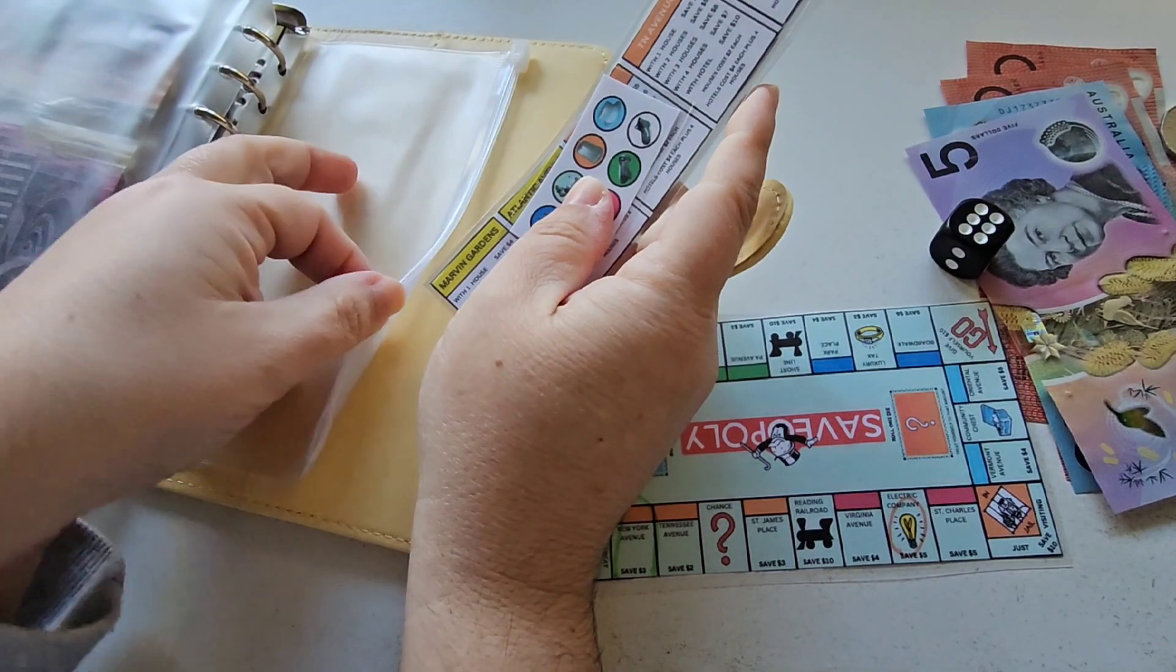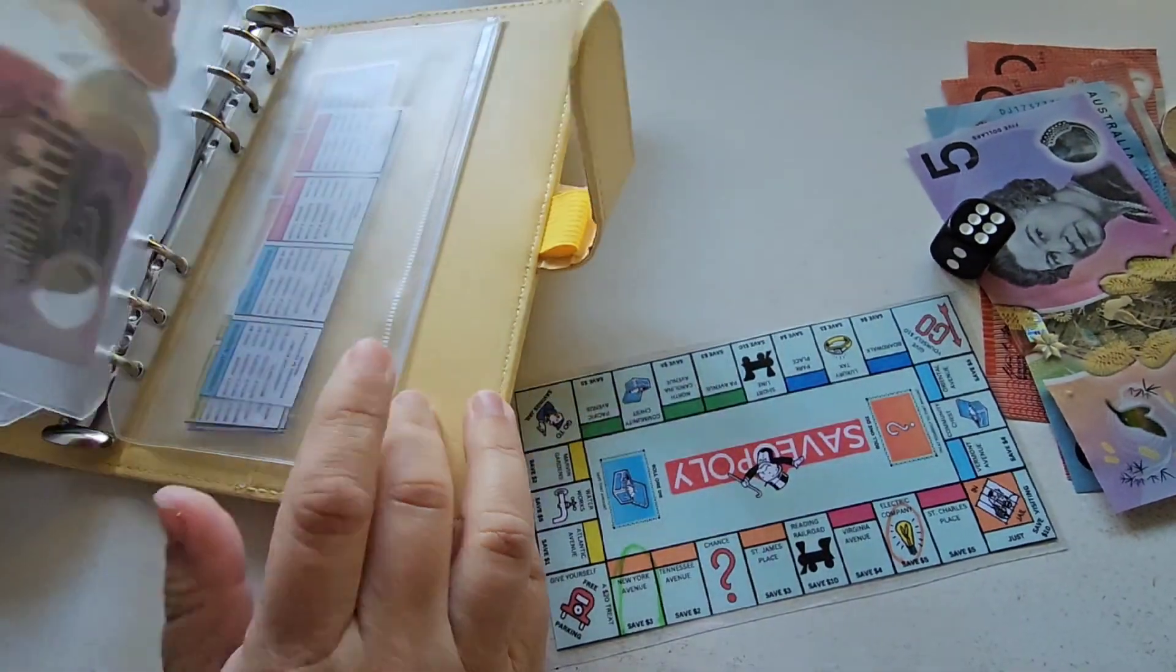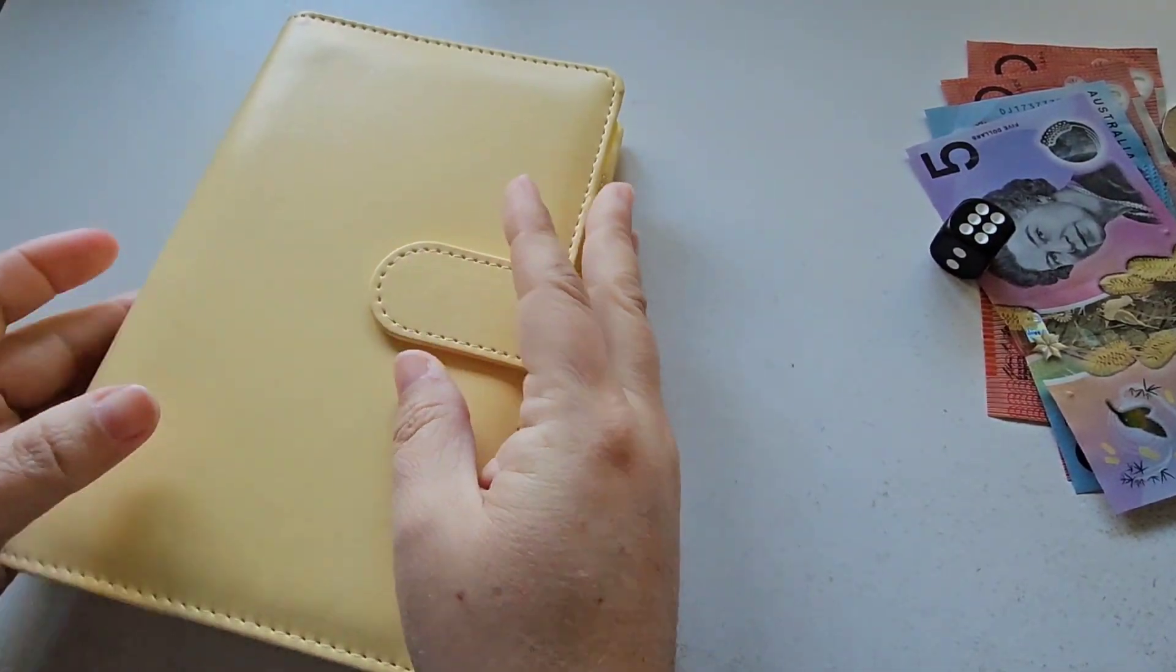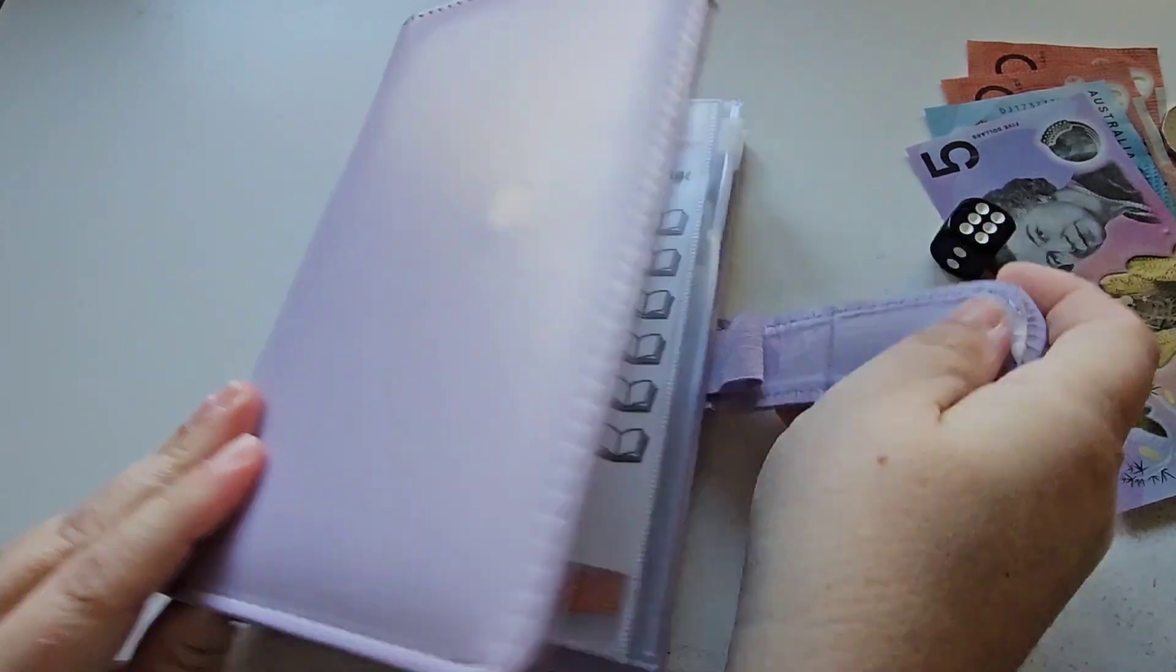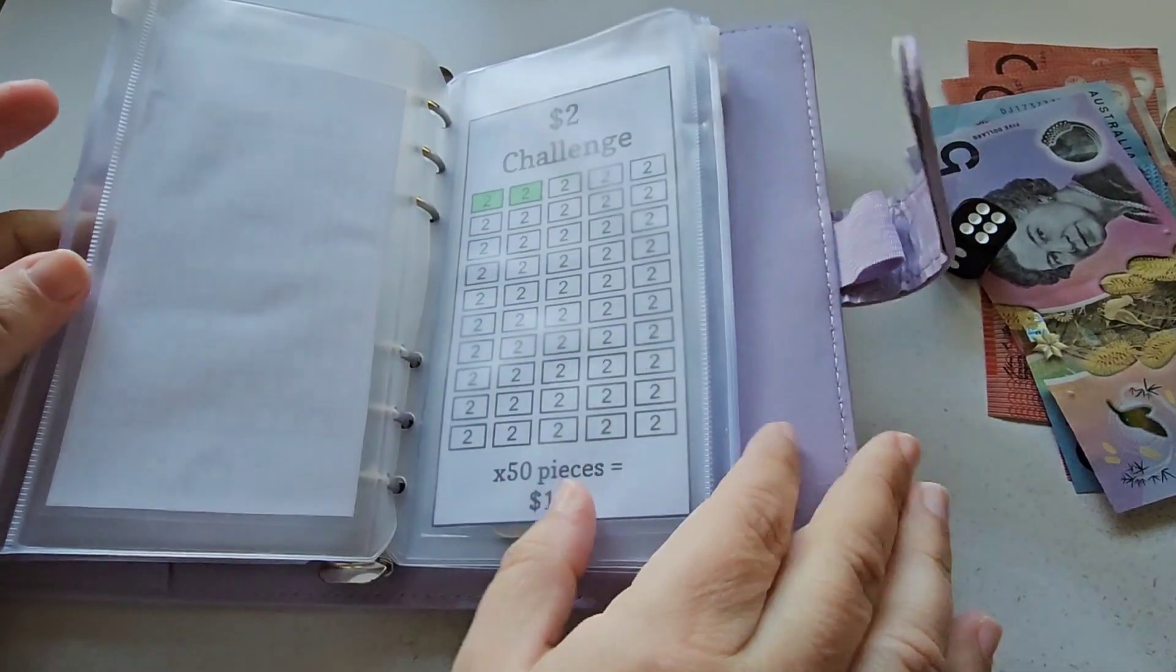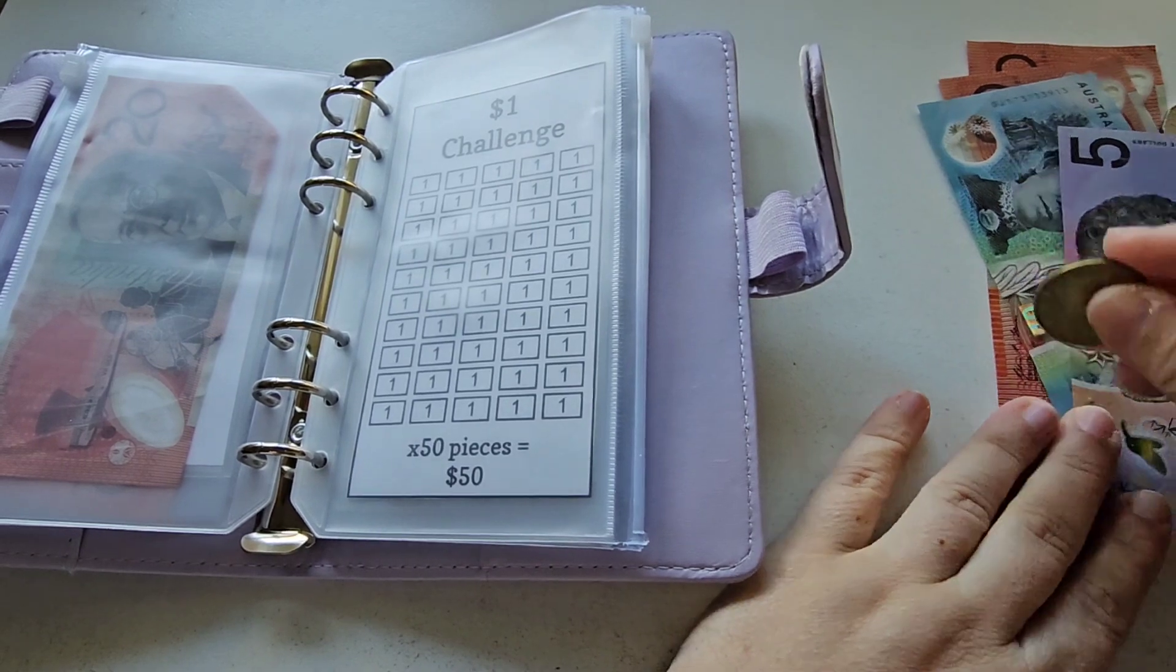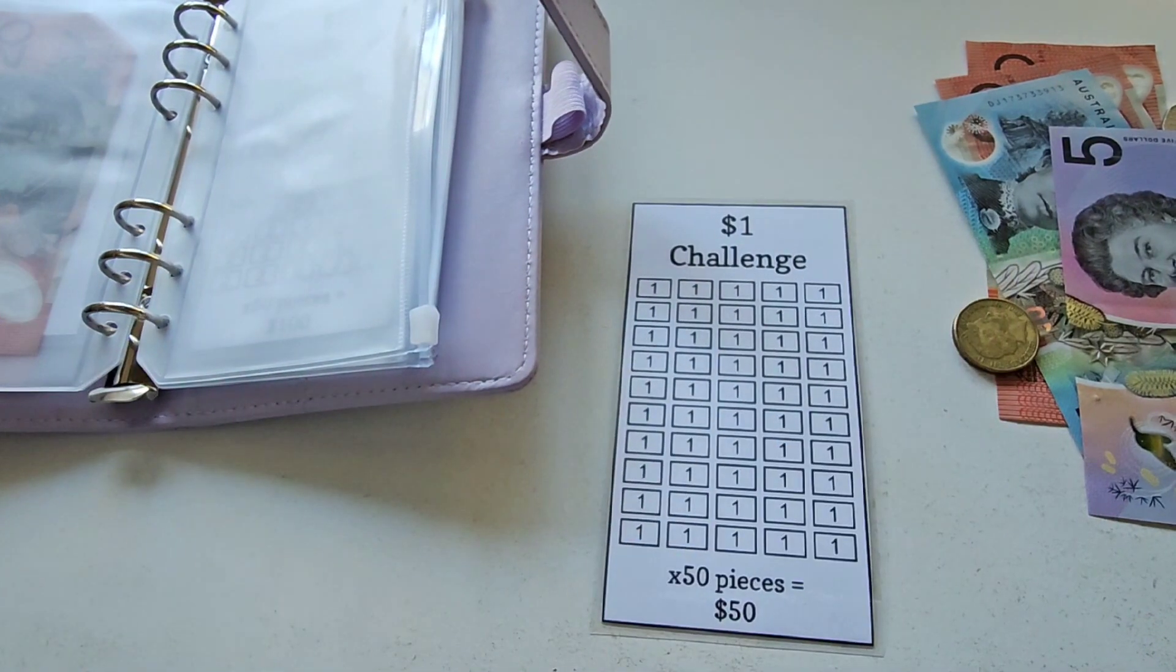And then that's the yellow binder completed so then we go to our next binder which has a few different things in there that I'm saving for. So this is the pink one, it has a bit of a mark on it. So in this one I have reading planner, one dollar, two dollars, five dollars, and then Christmas as well.